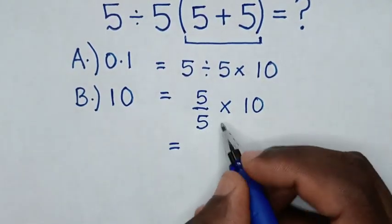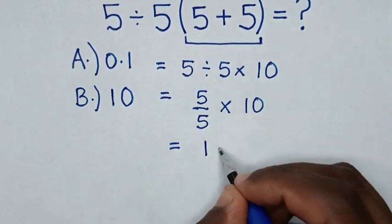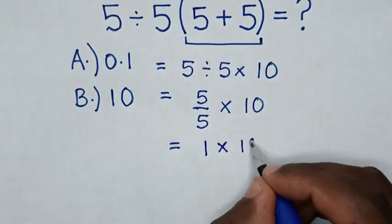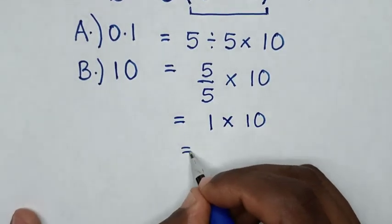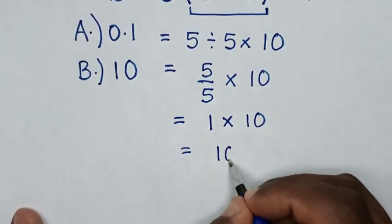Then it will be equal to 5 over 5 is 1, then times this 10. So it will be equal to 1 times 10 is 10.